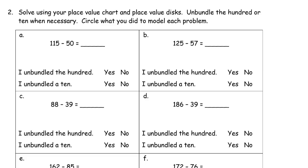For 115 minus 50 — can you take away 5 tens from 115? You don't really have 5 tens to take away, so you have to take apart the 100. You're not subtracting any ones, so think of it like the number bonds: break up the 100 into 10 tens, take away 5 tens, and you have 50 plus 15 left, which is 65. I didn't need to unbundle a 10 since I didn't subtract any ones.